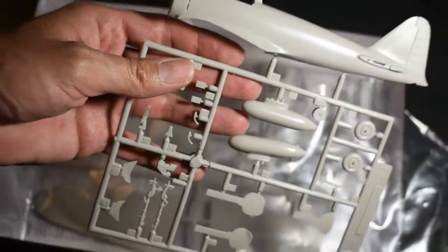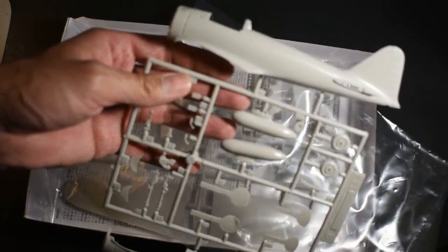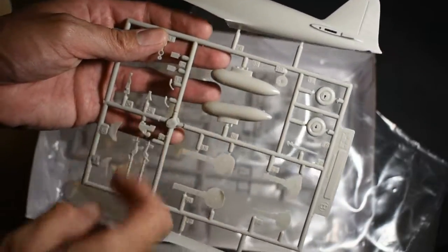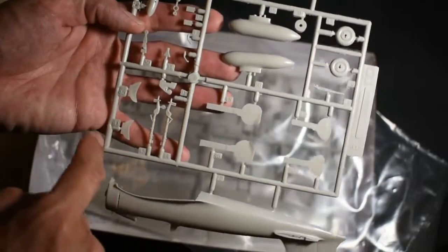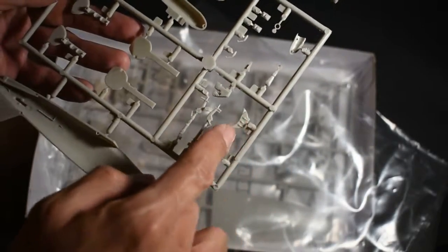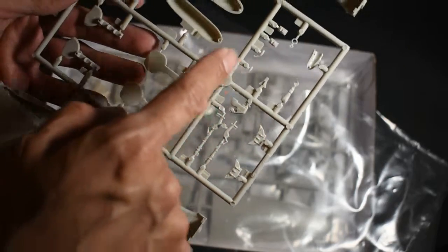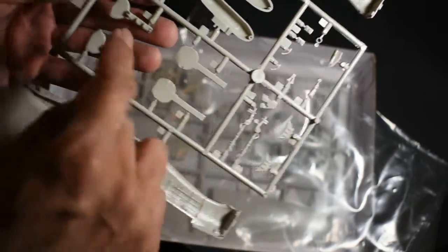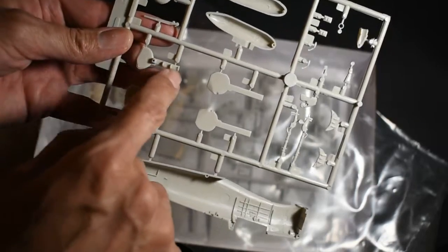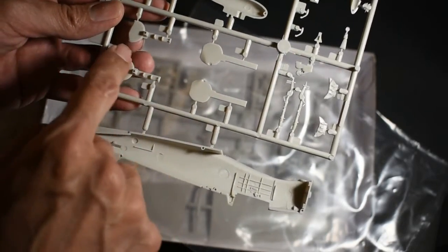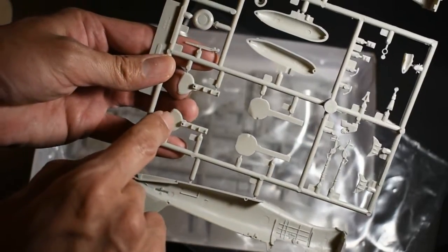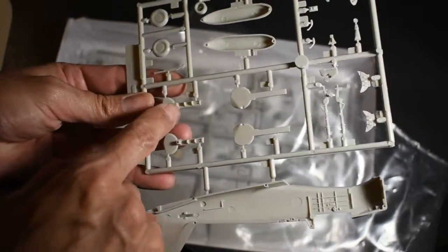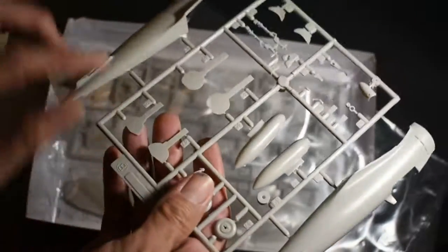And then we have the fuselage here. The wheels, fuel tank, landing gear, parts of the engine, maybe part of the cockpit area, antenna. Pretty simple. Just some ejector pin markings on the doors here. The landing gear doors, they give you two different choices here. You can have either the landing gear down or the landing gear up. That's one thing that I like about this kit.